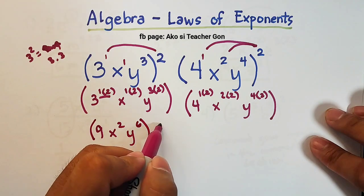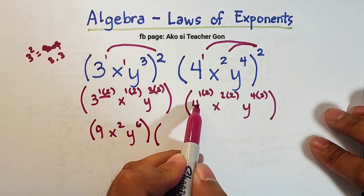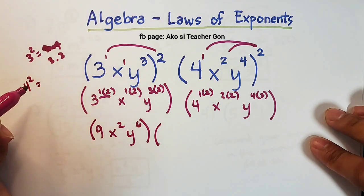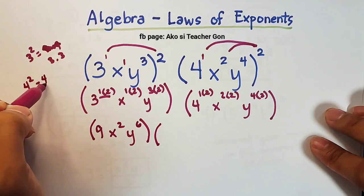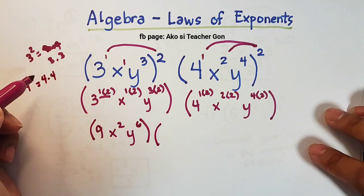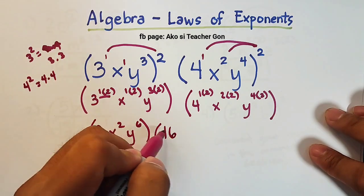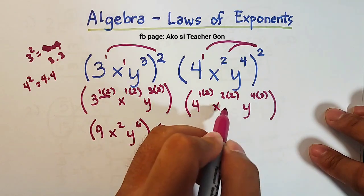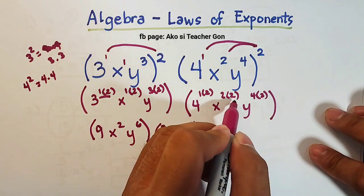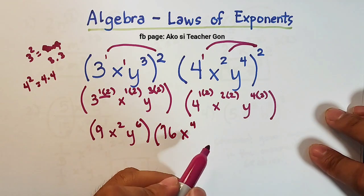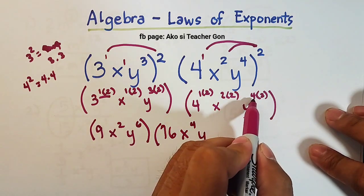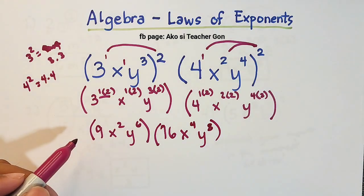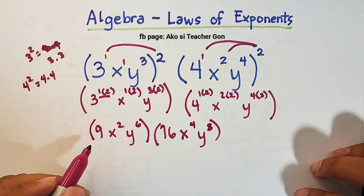For the second part: 4 raised to 1 times 2 is 4 squared, which is 4 times 4 equals 16. So we have 16. For x, 2 times 2 gives x raised to the fourth power. For the y variable, y raised to 4 times 2 equals y raised to the 8th. So we now multiply these two simplified expressions together.